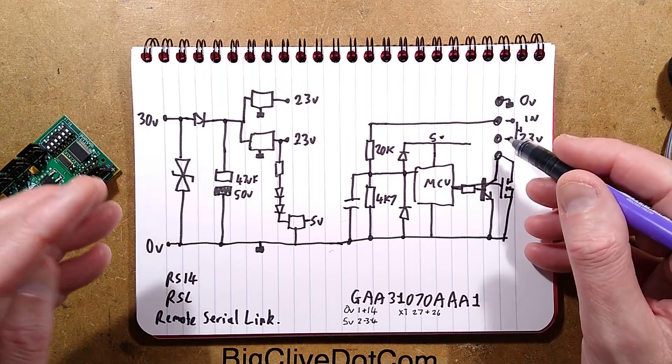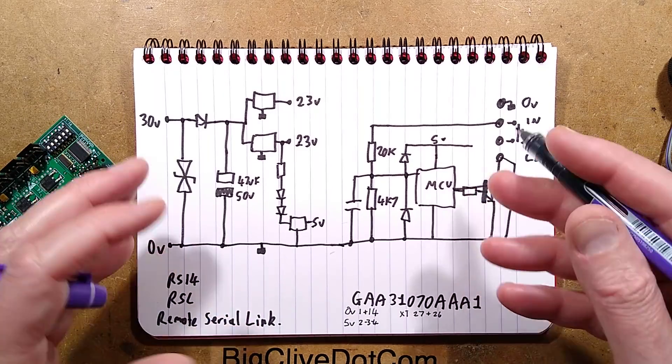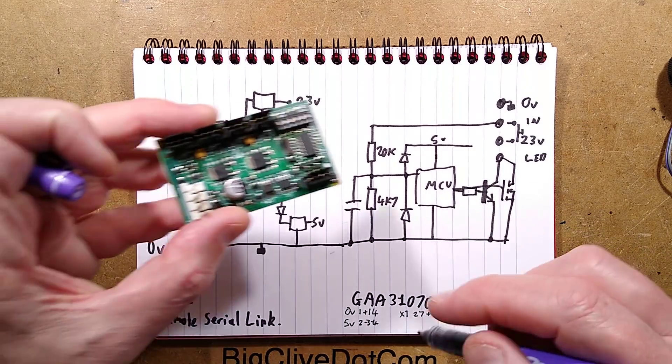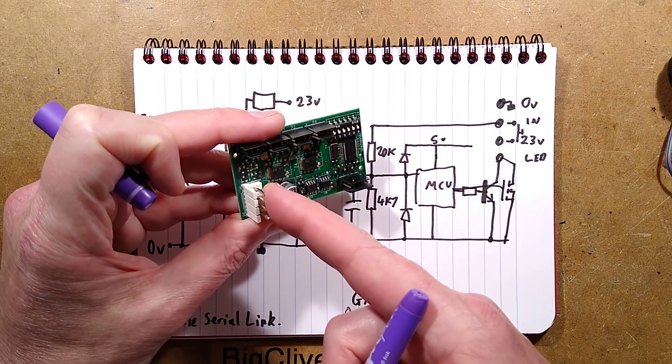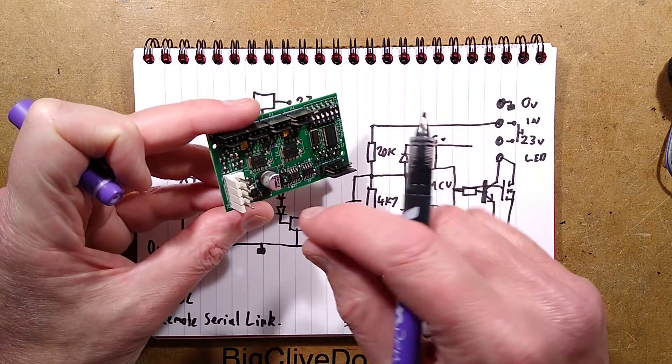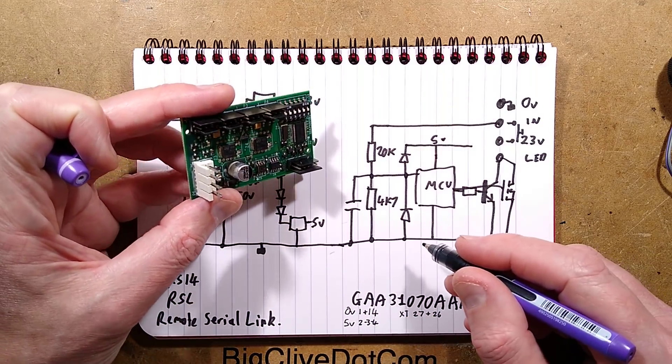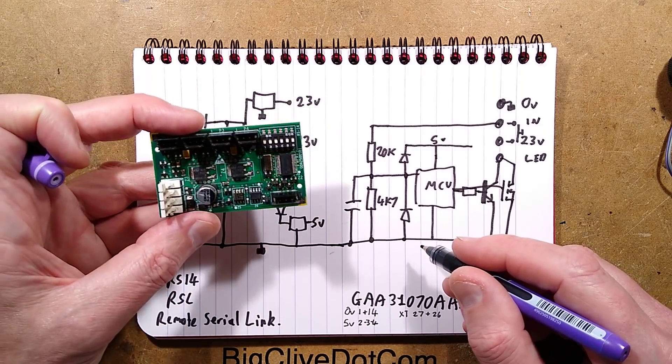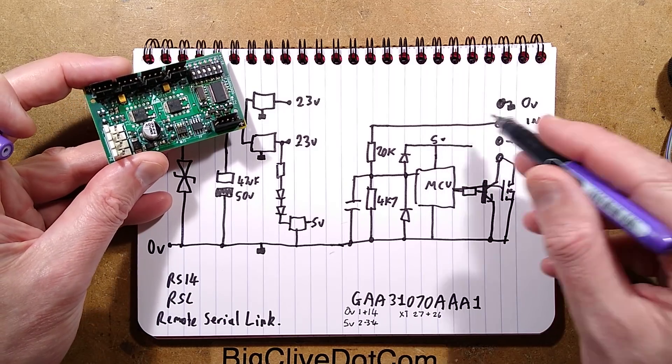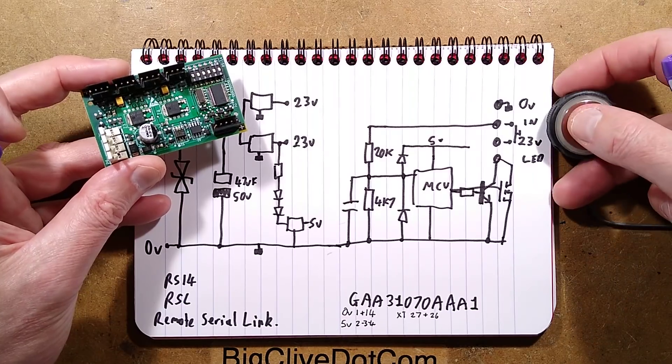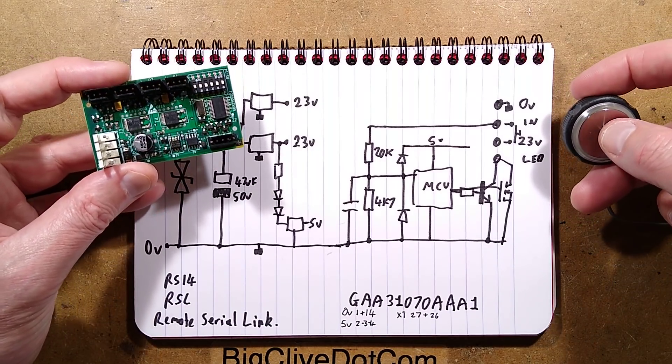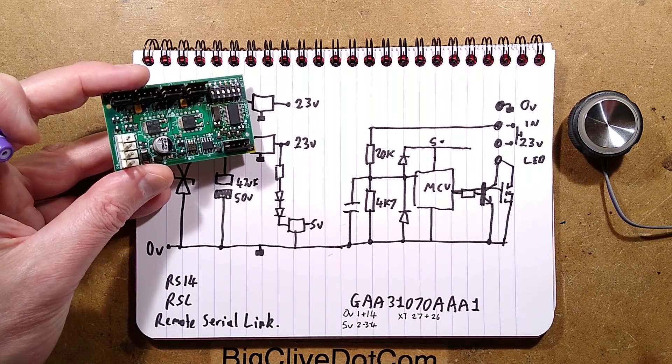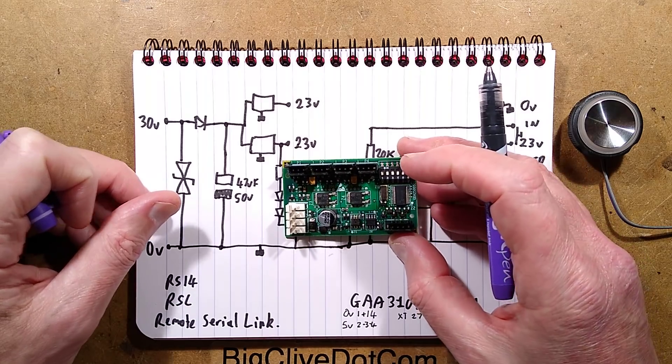When you press the button, it sends a signal to the microcontroller saying a button has been pressed. The microcontroller most likely sends a signal on the bidirectional serial network. I think it jams it deliberately to get attention, similar to CAN-BUS but it's not CAN-BUS. It sends a signal back saying the button has been pressed, and if everything is working normally, it sends a signal back to turn on the transistor and light the LED.